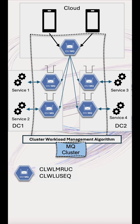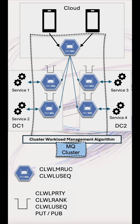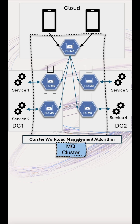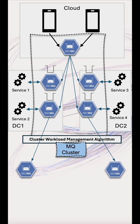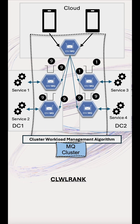So how does it work? It looks at a bunch of queue manager, queue, and channel attributes to decide where to send the message. The algorithm progressively narrows down the list of possible destinations. First, it removes destinations that connect outside the cluster. Then it selects channels and queues with the highest value cluster workload ranking attribute. In this case, the channel and queue ranked 1 are eliminated.